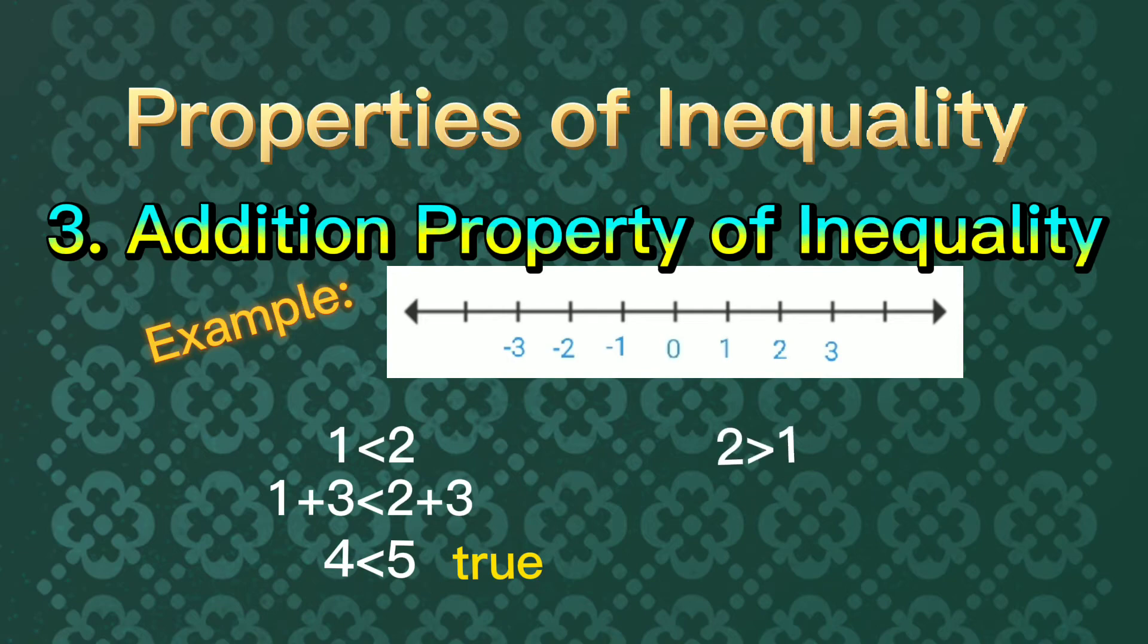Also, we have 2 is greater than 1. We add 3 to both sides of this inequality. We have 5 is greater than 4. This is true to our definition of addition property of inequality.